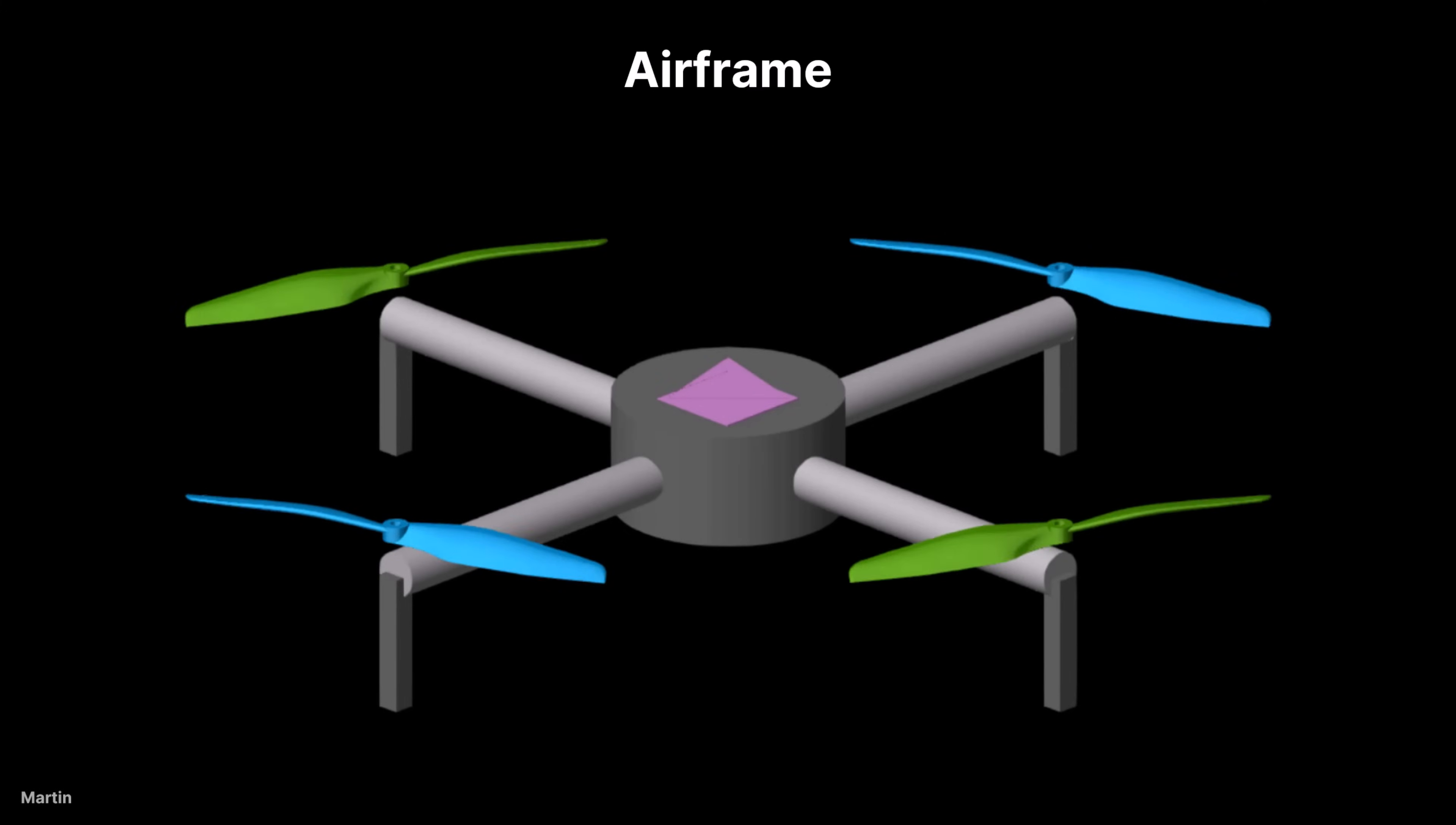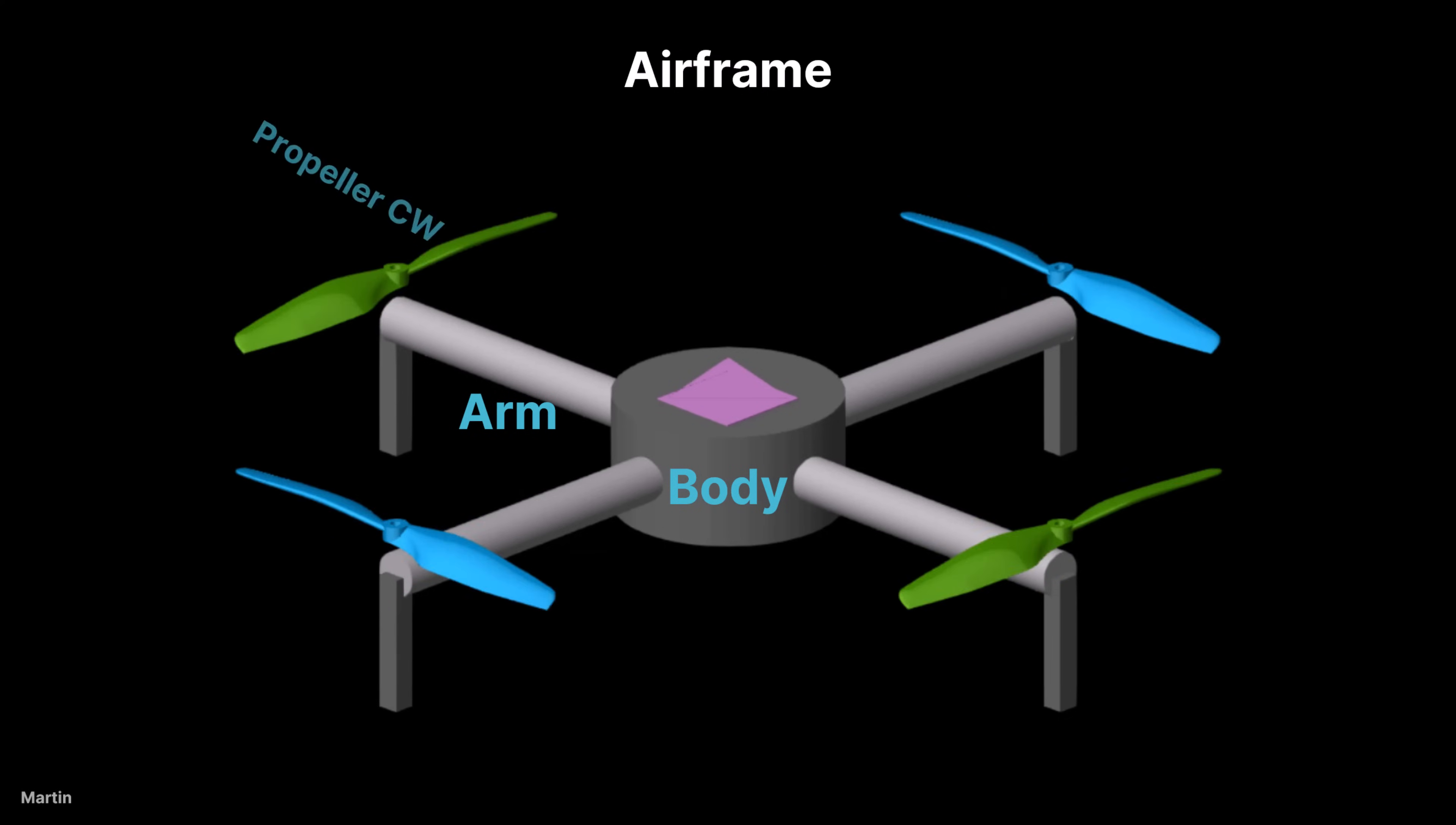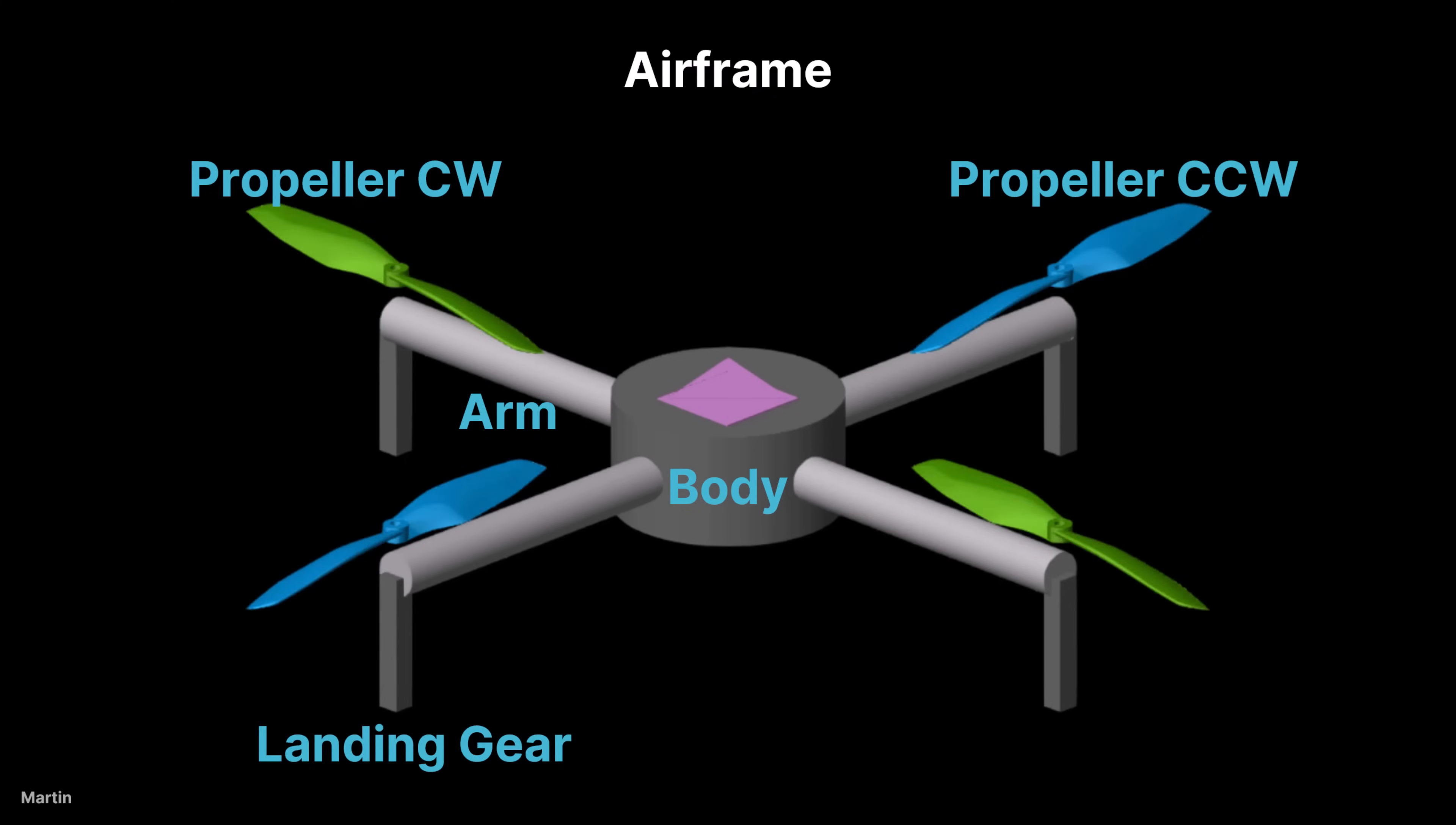The airframe of a quadcopter consists of several key components. To simplify, it includes the body, which houses onboard electronics and payload. Extending from the body are four arms, each supporting a propeller, two rotating clockwise and two counterclockwise. Additionally, the airframe includes landing gear.